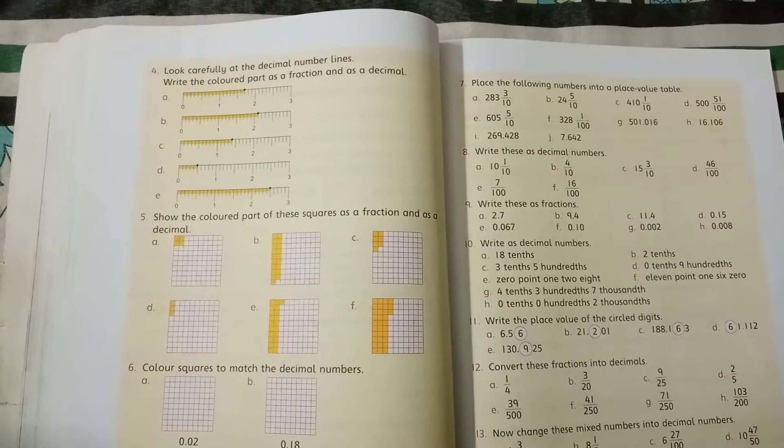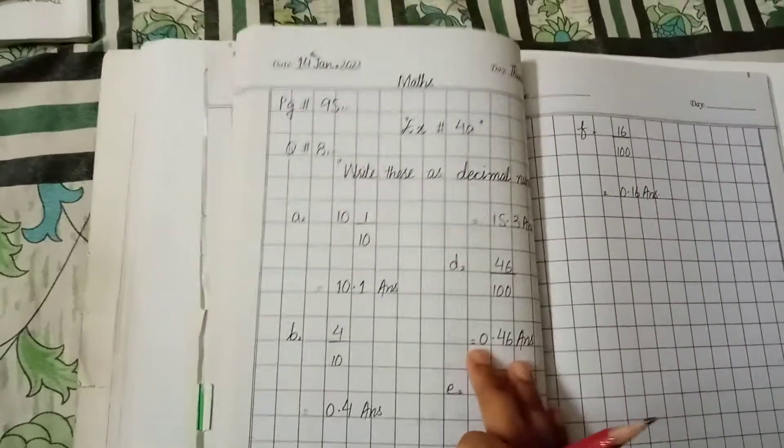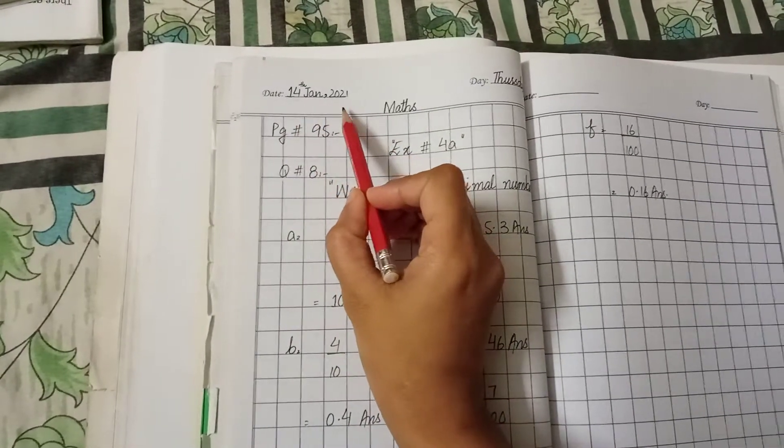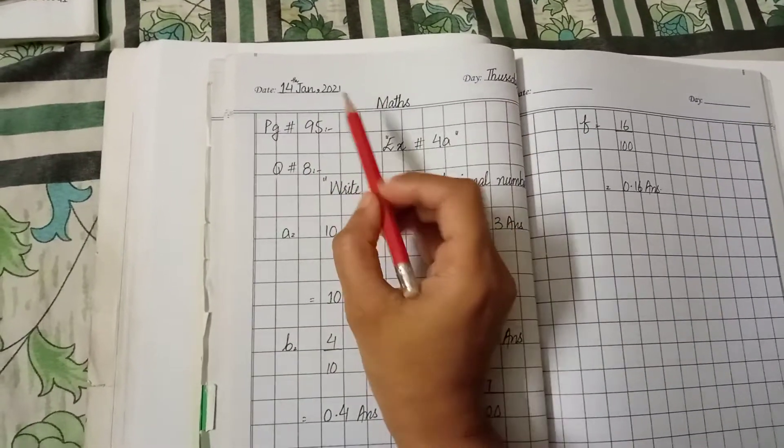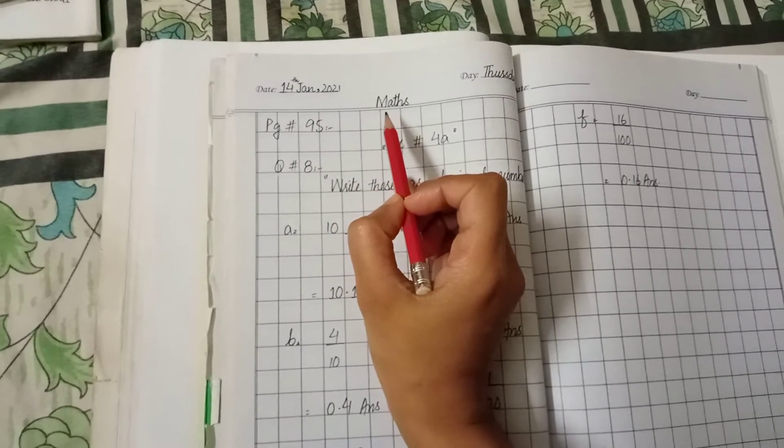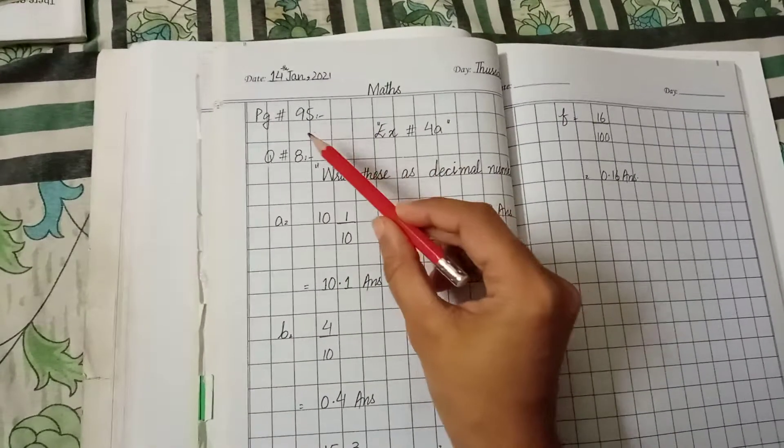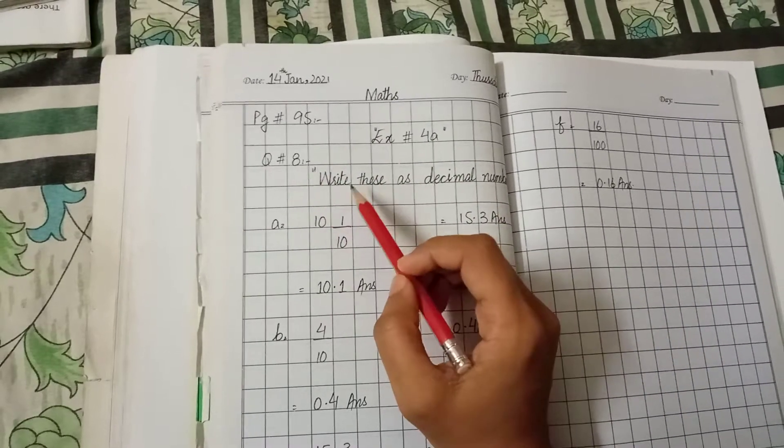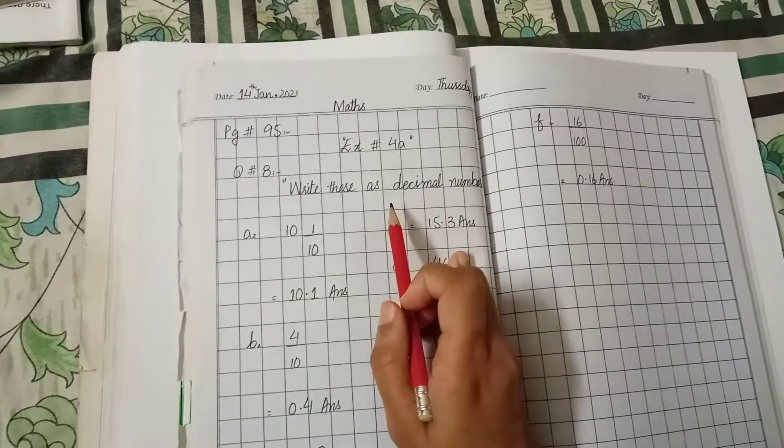Okay, first of all, all of you open your notebooks. Mention date and day on your notebook. Today is 14th January 2021 and the day is Thursday. I write here maths but you will write here classwork. Page number 95, exercise number 4a, question number 8. Write these as decimal numbers.